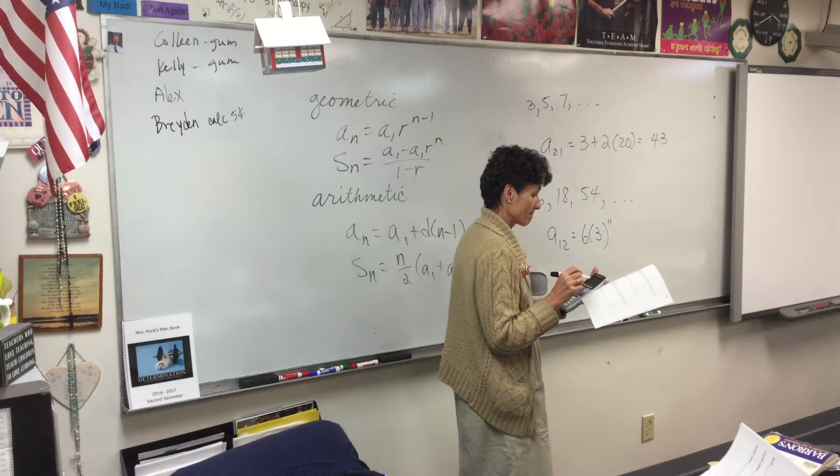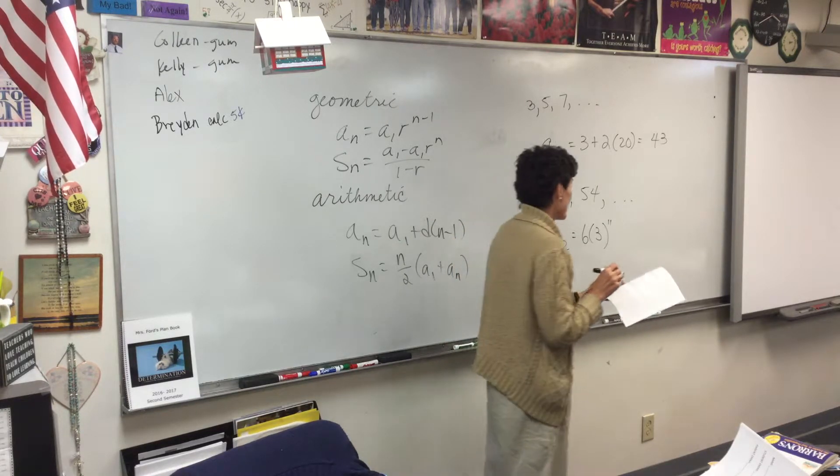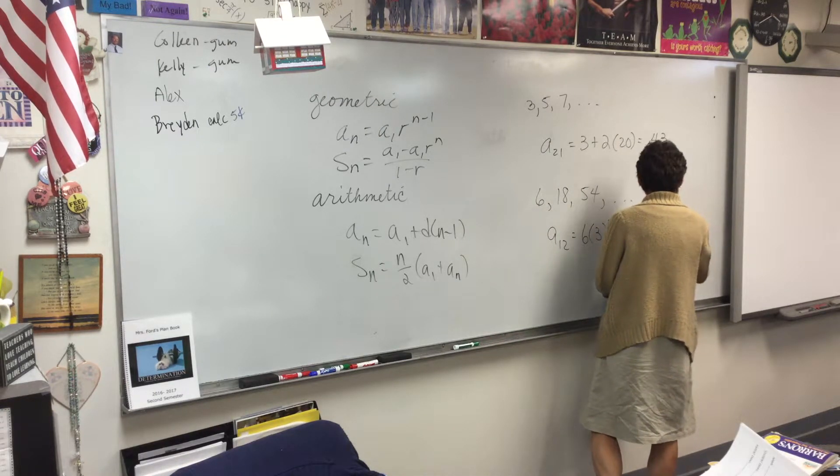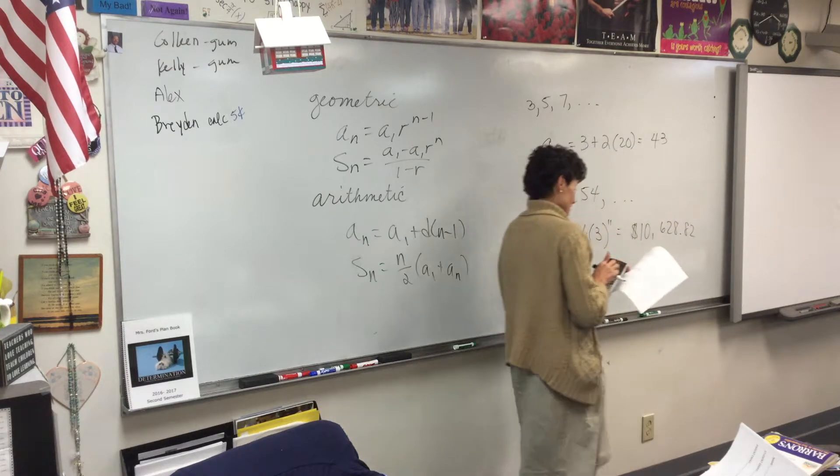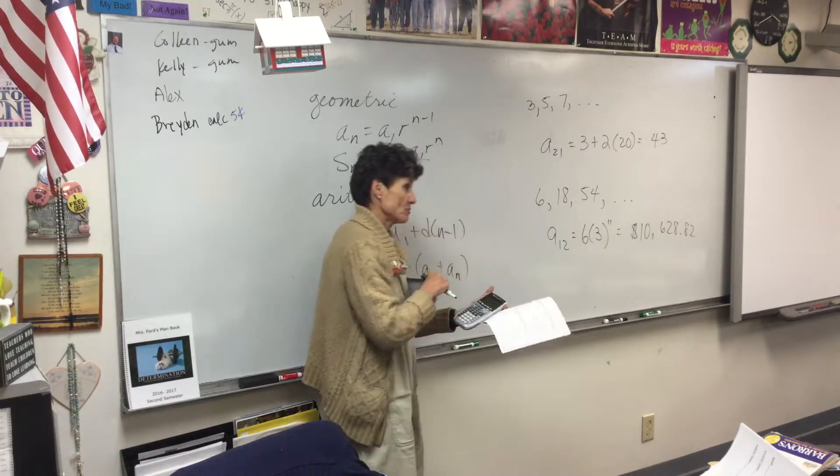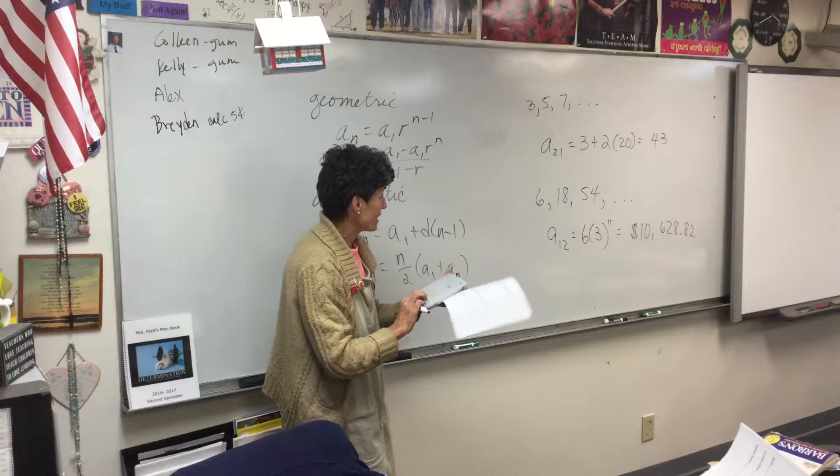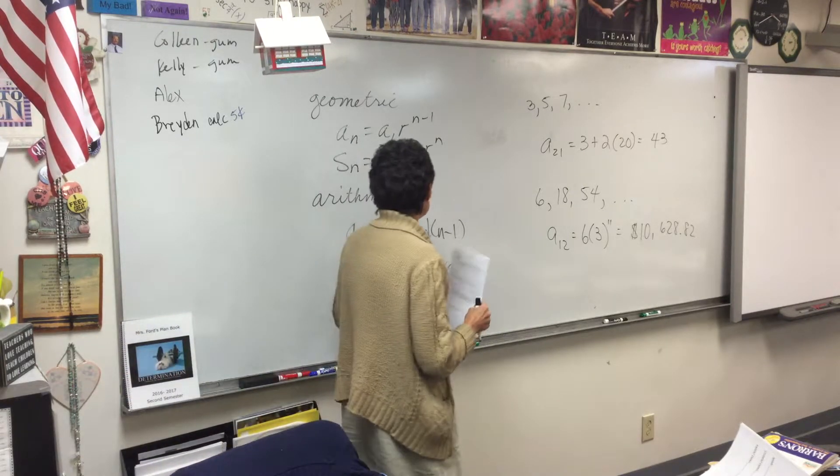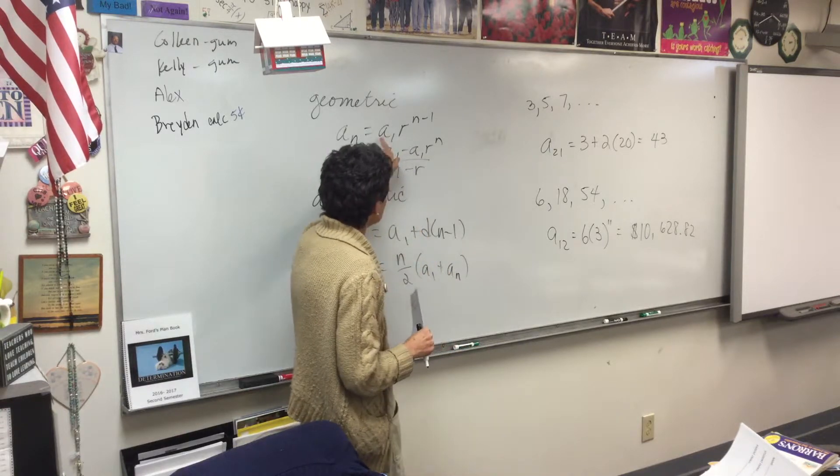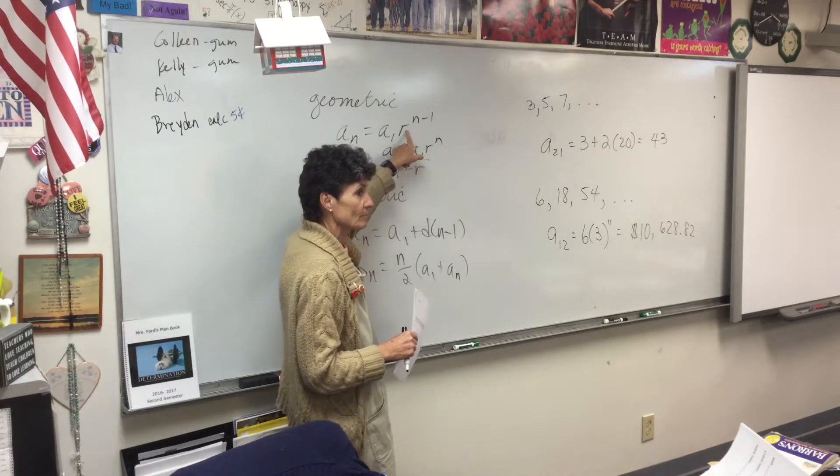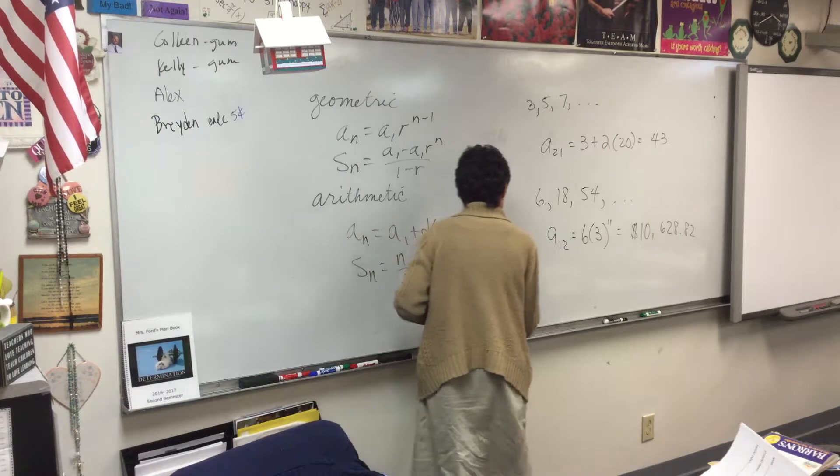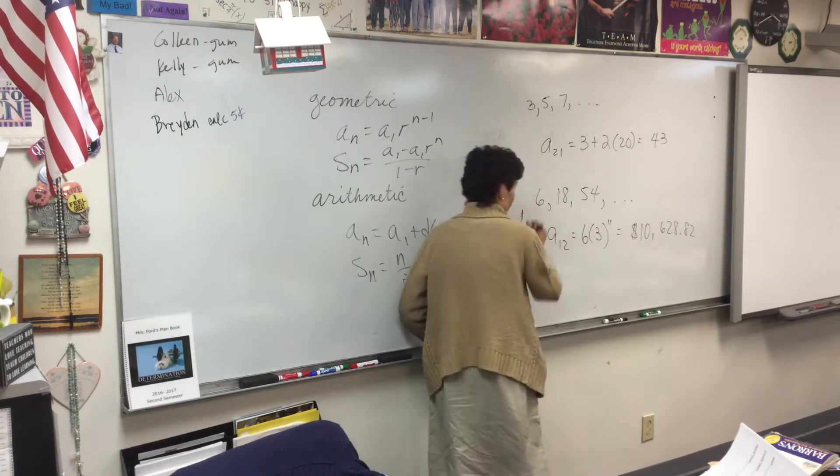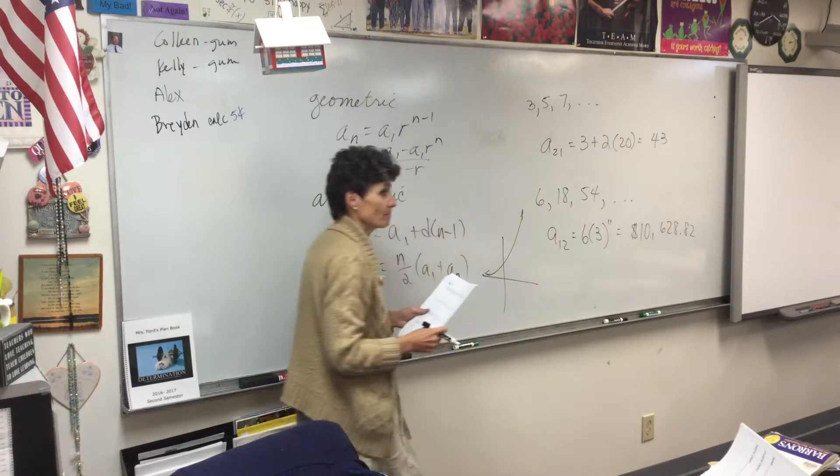What'd you get? $10,628.82. Geometric sequences grow very, very, very fast. They grow exponentially. Look at the equation. Isn't that an exponential? And we know that exponentials, when we graph them, look like this. This is where you are. Growing, growing, growing, growing, growing fast.